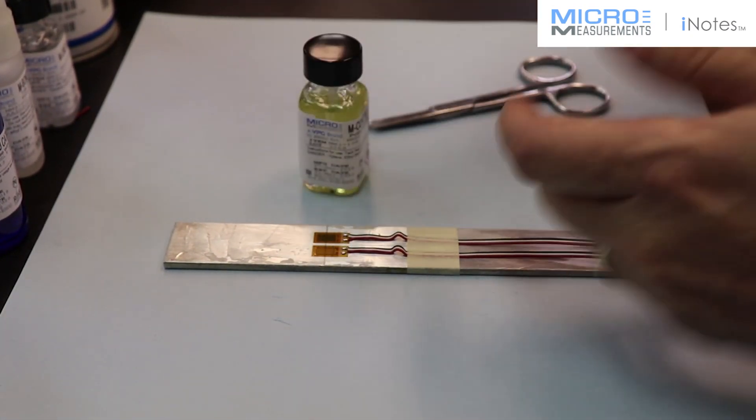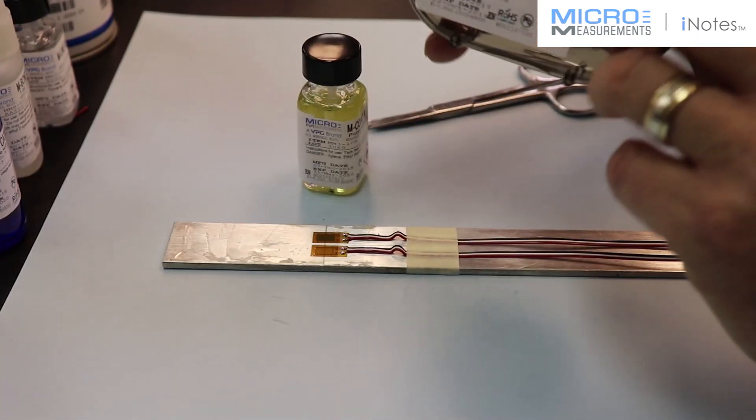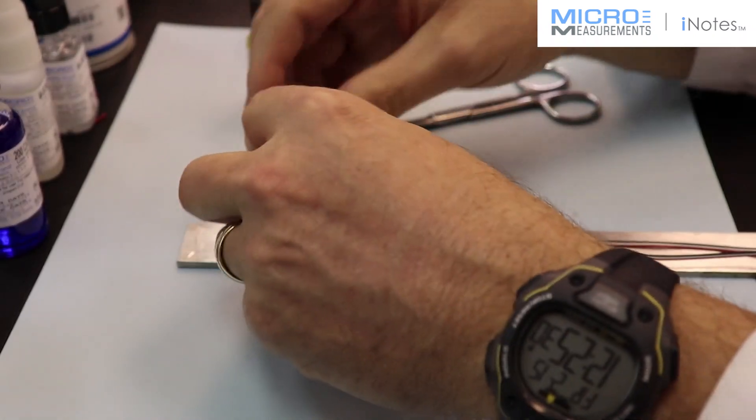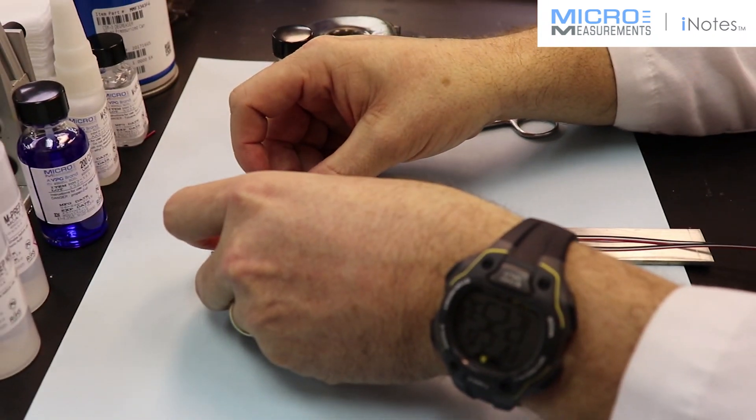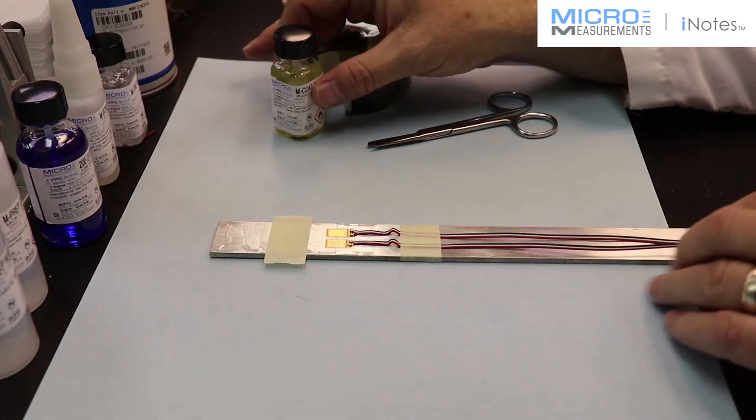I'm going to take it, put it down, and before I apply the coating, I'm going to take another piece of paper drafting tape and I'll just put it at the end of the strain gauge. This is just to make the coating look nice. I'll just kind of cover over the end of it like that.